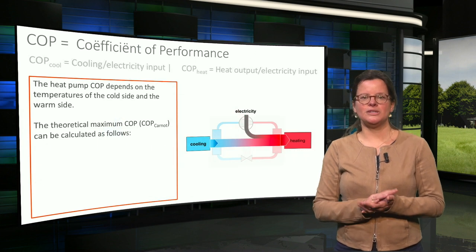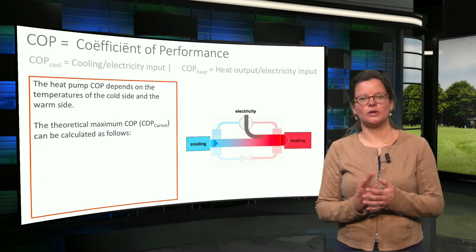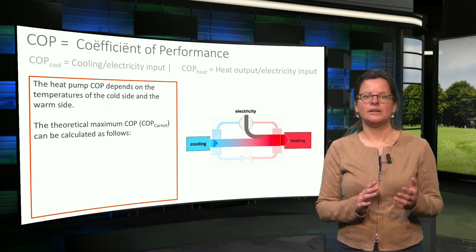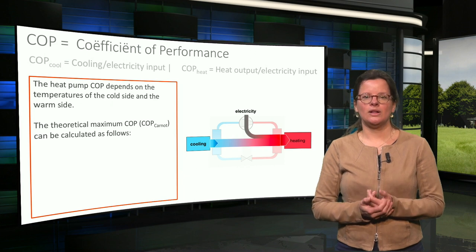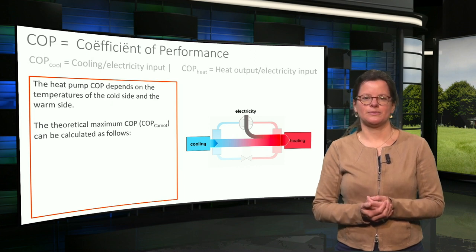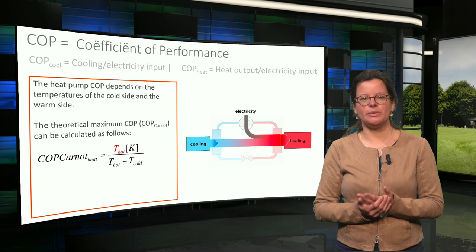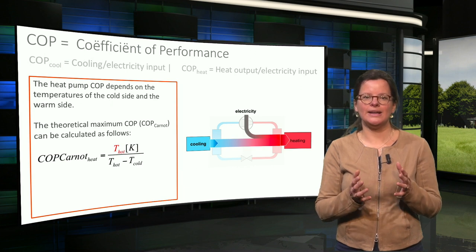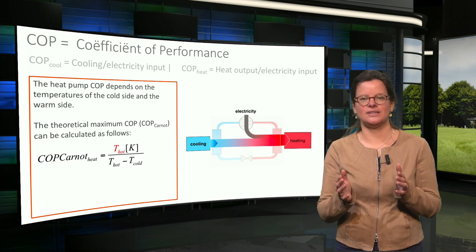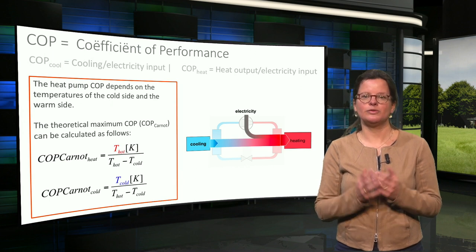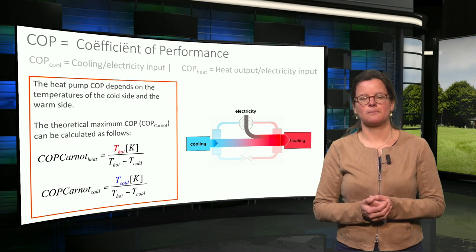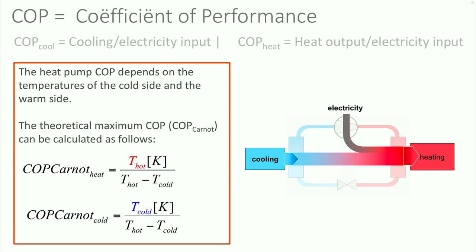The achievable heat pump COP depends on the temperatures of the cold side and the warm side. The theoretical maximum COP, which is called the COP Carnot, can be calculated based on the temperatures. The maximum COP for heating is determined by dividing the high temperature by the delta T, and the maximum COP for cooling is determined by dividing the temperature of the cold side by the delta T. Please note that the Kelvin scale must be used for the temperatures.